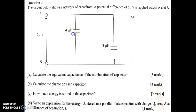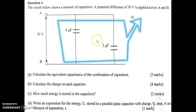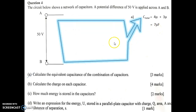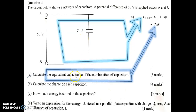Next, 4 µF and 3 µF are now arranged in parallel. So we just add them together: 4 µF plus 3 µF gives us 7 µF. Therefore, the equivalent capacitance of the combination of capacitors is 7 µF.